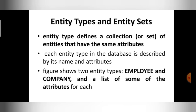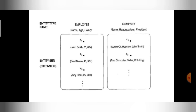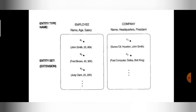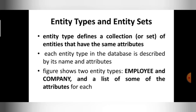What is entity type and what is the entity set? Entity type is nothing but a collection of entities that have the same attributes. I can group entities into an entity set if they have the same attributes. For example, the employee entity has the same attributes: name, age, and salary. I can group those employees — John Smith, Fred Brown, Judy Clap — into a set. Entity type means you are collecting and grouping entities that have the same attributes.